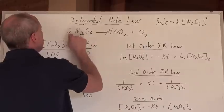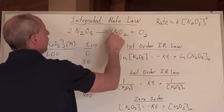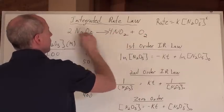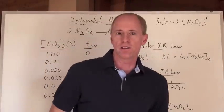The question is, here's a reaction, 2N2O5 is going to make 4NO2 plus oxygen. So here's the reaction, and I say, what's the rate law for that?